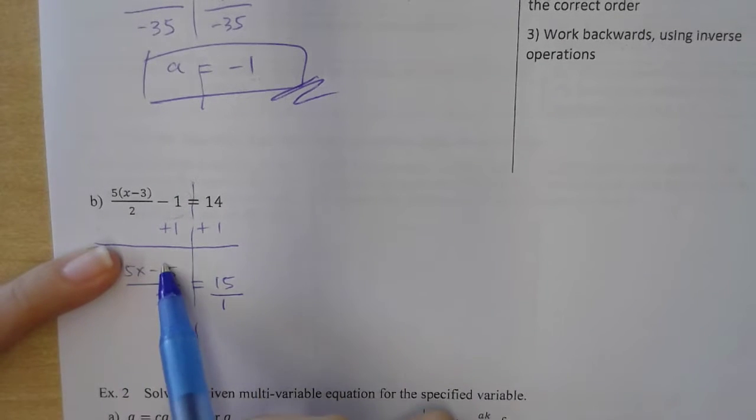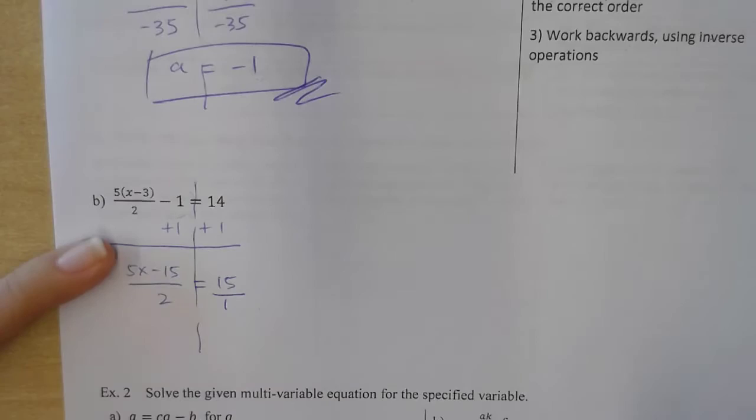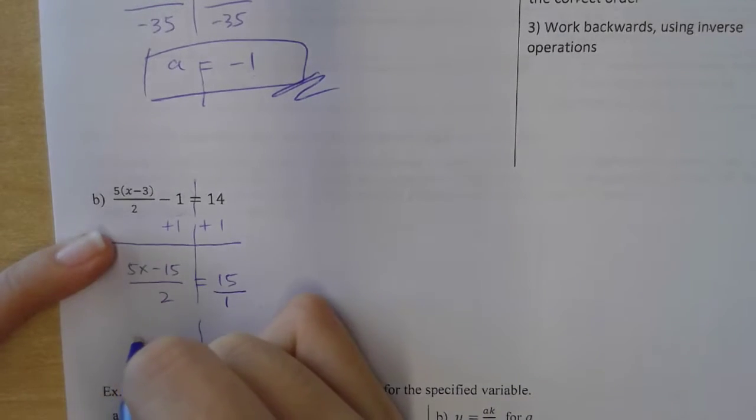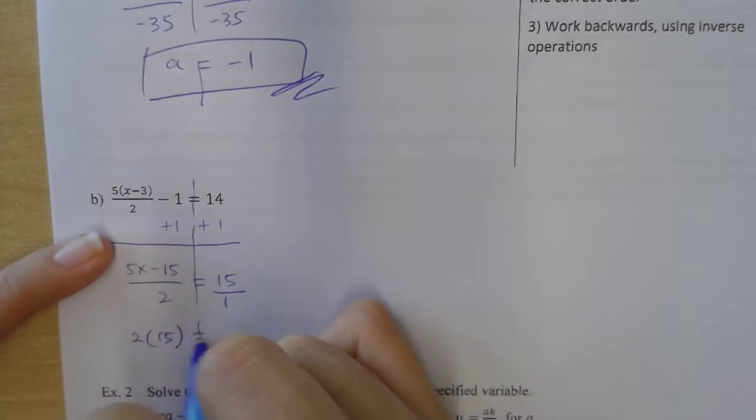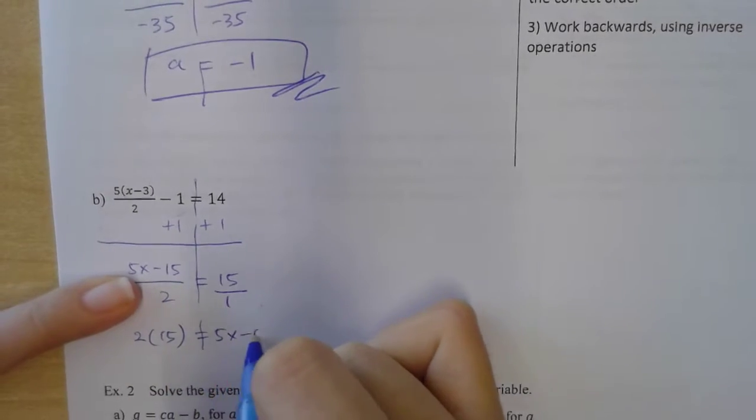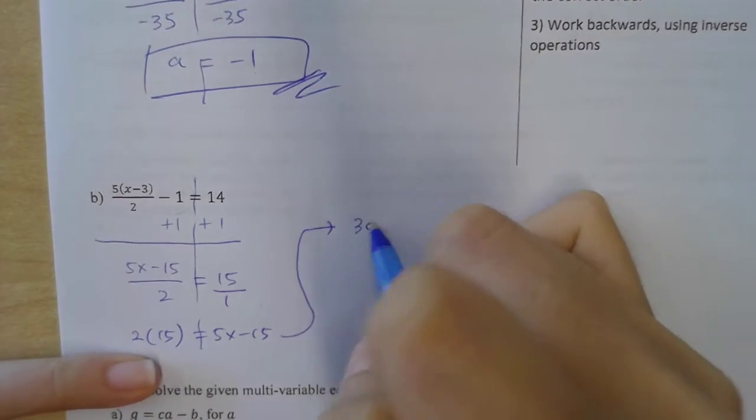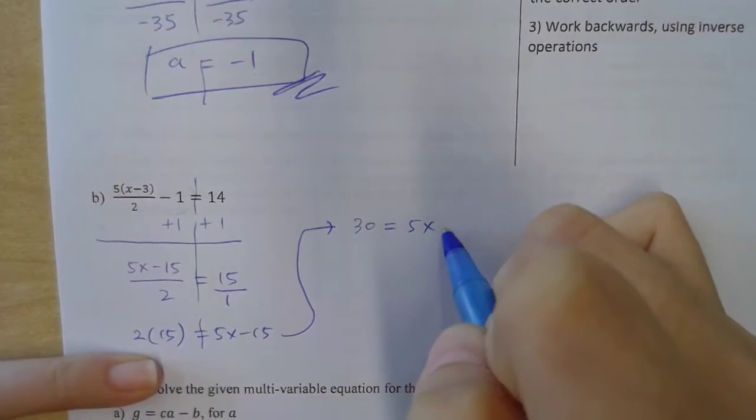All right. So now we have a fraction equal to another fraction. So this is when you do cross multiply instead of equal to each other. So 2 times 15 equals 1 times anything is itself. I'm gonna carry it over here. I'm running out of space.